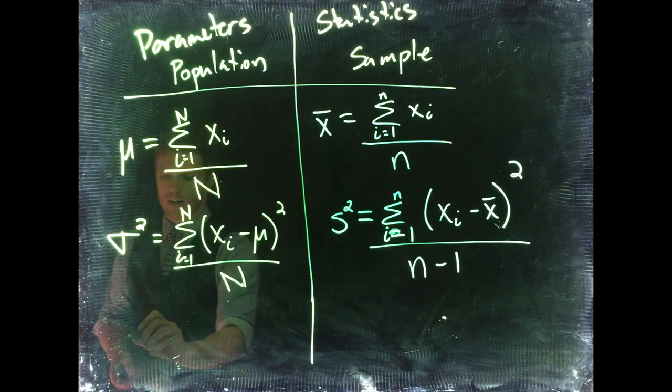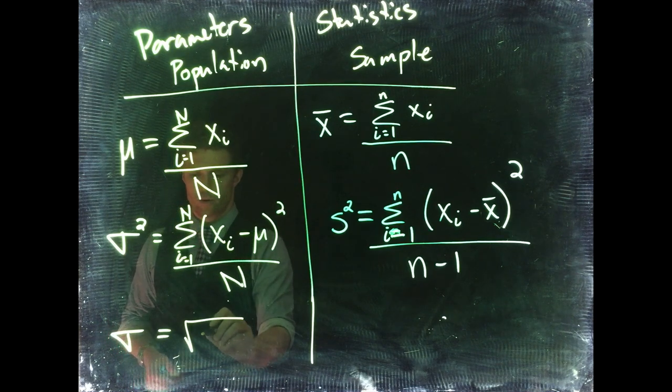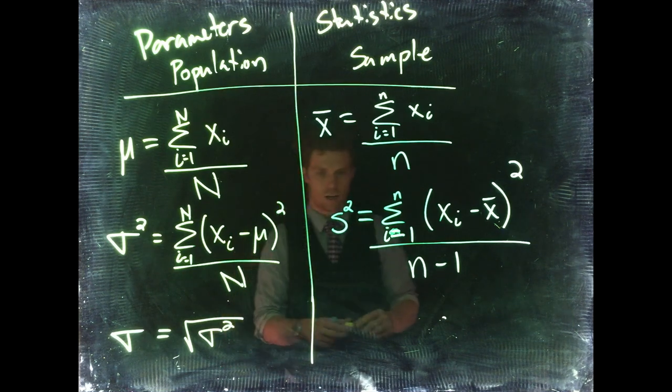Then if we want to know what the standard deviation is, we've done all the hard work. We literally just take the square root of our variance, or the square root of this. That will give you your standard deviation.